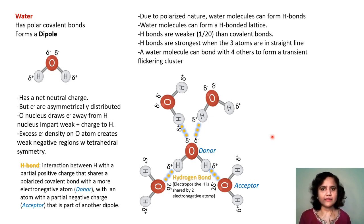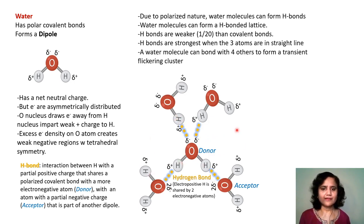They would be strongest when the three atoms are in a straight line. A water molecule can bond with four others to form a transient flickering cluster inside the aqueous medium.